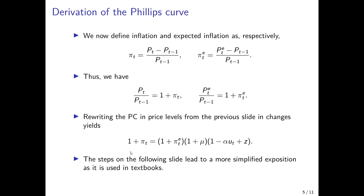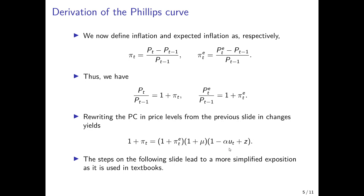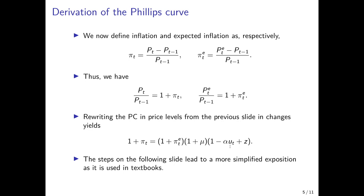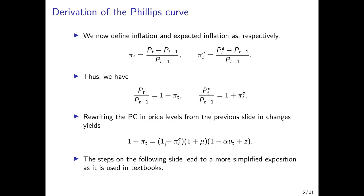Plugging this in, we would have 1 plus the inflation rate on the left-hand side, 1 plus mu from the markup expression, 1 plus the expected inflation rate, and still the term 1 minus alpha·u_t plus z. We then perform simplifying steps that lead us to the PC equation as it is usually used in textbooks, also in Blanchard. This simplification involves dividing the previous expression by (1 plus expected inflation) and (1 plus mu), shifting these two terms to the left-hand side, leaving the right-hand side equal to 1 minus alpha·u_t plus z.